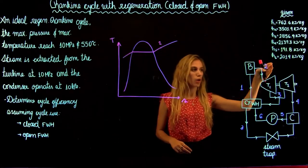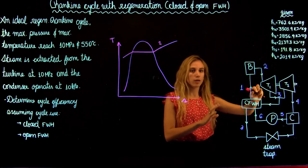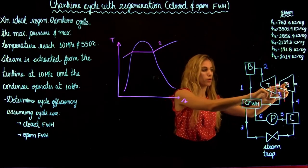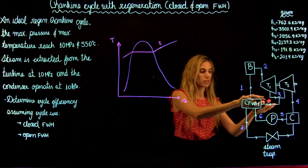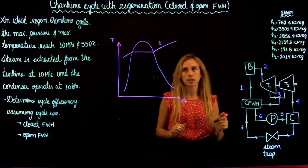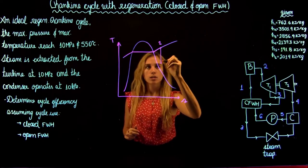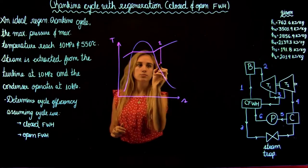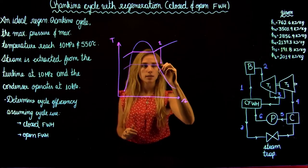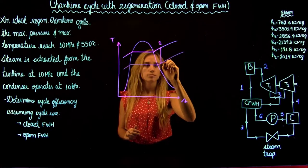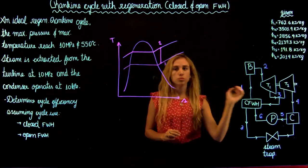What is happening is that we're going to go through the expansion of the first turbine. Then a fraction of the flow is going to go to the expansion of the second turbine, and the rest of the fraction of the flow is going to go to the closed feedwater heater. So we're going to go down to the low pressure line — that is happening in the high pressure turbine, so it's going to be number three. Then we're going to go down to the condenser.